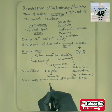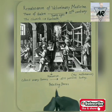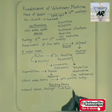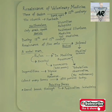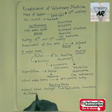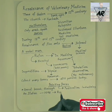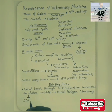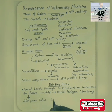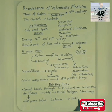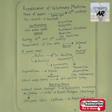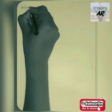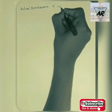Around this time, the printing press was invented — a great breakthrough in the field of publication for literature, scientific research, and other works. An Italian named Leonie Bologna wrote the first anatomy book in 1598. About 200 years later, a Frenchman named La Fossi published a second anatomy book, mainly about human and equine anatomy. The actual renaissance of veterinary medicine, however, started in the 18th century.